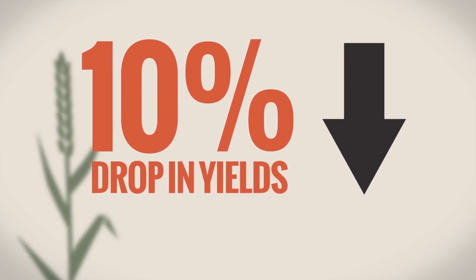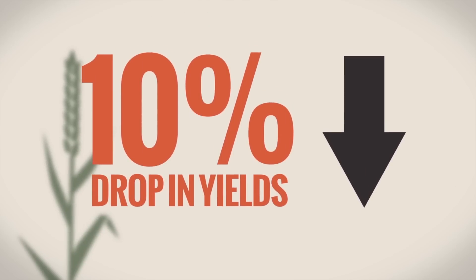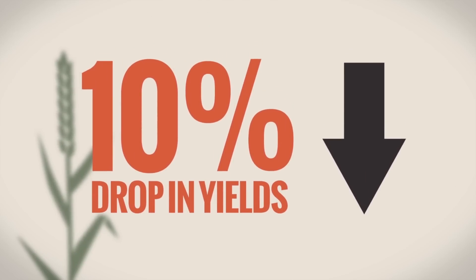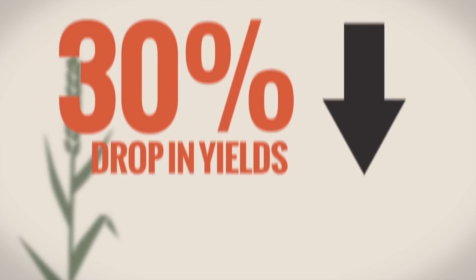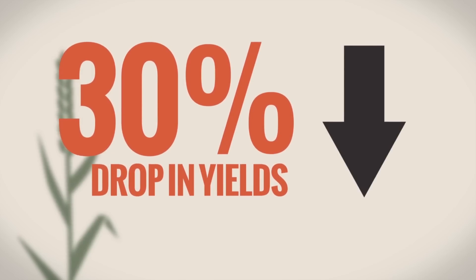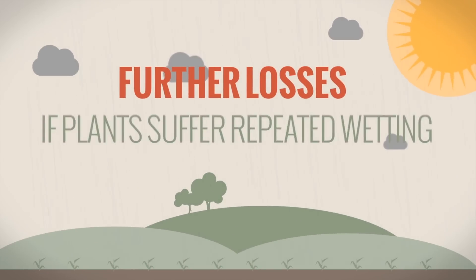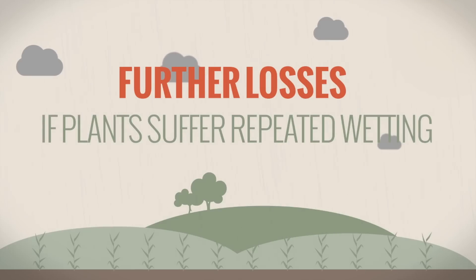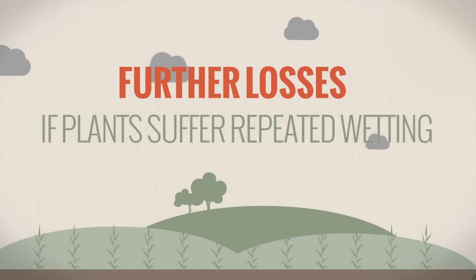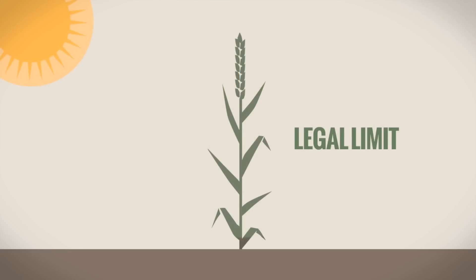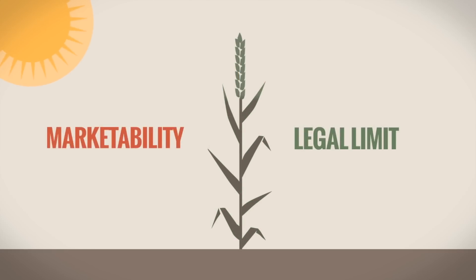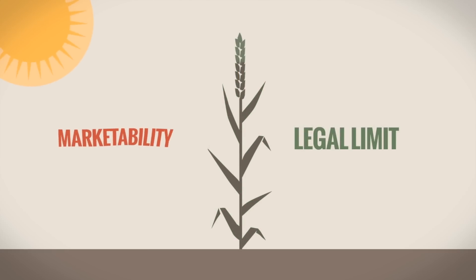In typical years, growers with infected crops can expect a 10% drop in yields. However, in high disease situations losses can be up to 30%. Further losses can be experienced if Fusarium infected plants suffer repeated wetting of the ear during grain fill, as this can lead to high levels of mycotoxins forming in crops. Should these exceed legal limits for human consumption or EU guidance values for animal consumption, the marketability of the crop will be affected.